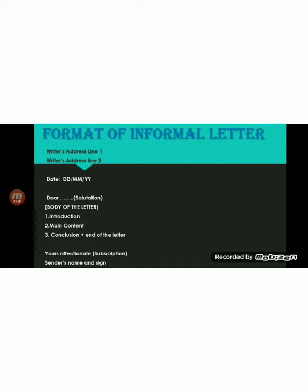After the address, give a space and then write the date — the format is day, month, and the year. Then give a space and start with the salutation, like 'Dear Uncle' or 'Dear Auntie' or 'Dear Brother,' followed by the introduction, which is the first part of the body of the letter, then the main content, and the third part should be the conclusion. After that, you end the letter and write 'Yours affectionately' or 'Your beloved son' or 'Your loving brother/sister.'